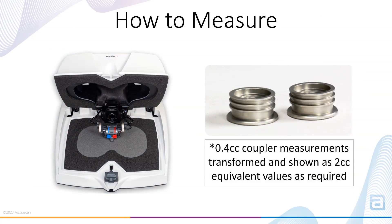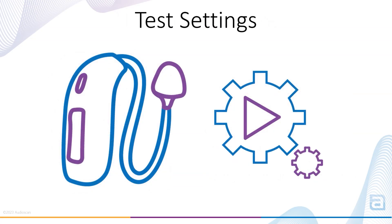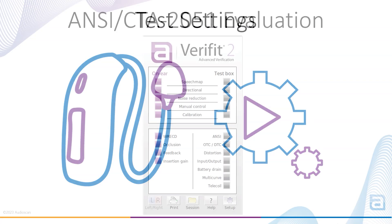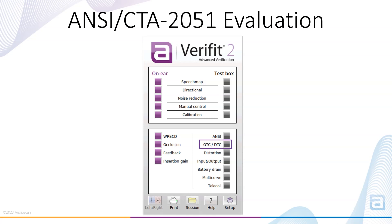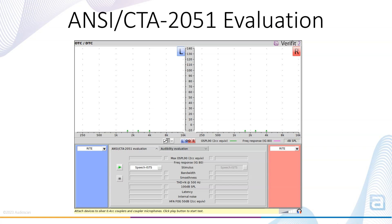Testing is performed in the binaural test box using 0.4 cc couplers, enabling efficient and accurate binaural testing of OTC and DTC devices. Measurements are automatically converted to 2 cc equivalent values as required by the test standard. Before running a test, if possible, set the OTC hearing aids to test mode or program the devices with full-on gain settings with the widest possible frequency range and non-linear adapter processing minimized. To get started, select the OTC-DTC test suite from the Verifit 2 menu. With the NC-CTA 2051 evaluation tab selected, configure each device for left and right side, and configure the stimulus as speech or swept pure tones.